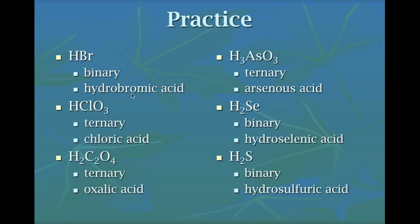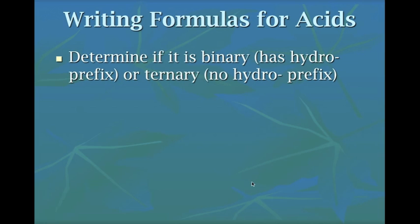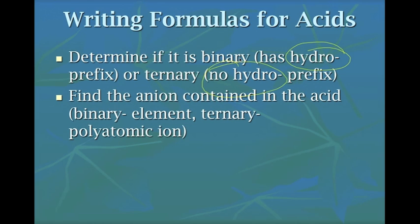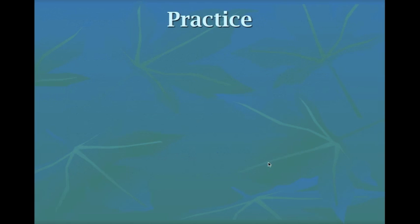Looking back at the names, any time we see 'hydro' we know it's a binary acid. When writing formulas from names, the first step is to determine if the acid is binary or ternary: binary will have 'hydro,' ternary will not. Then find the anion — just an element for binary, a polyatomic for ternary — and add enough hydrogen ions to balance the charge using the crisscross method.